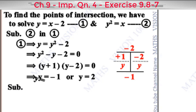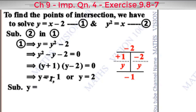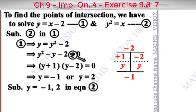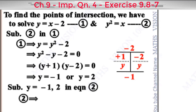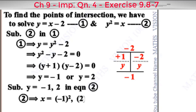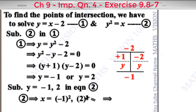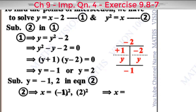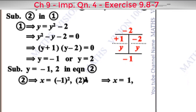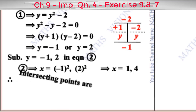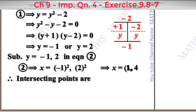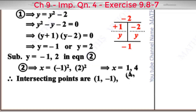Now substituting back to find x: when y equals minus 1, x equals y squared equals 1; when y equals 2, x equals y squared equals 4. Therefore the intersecting points are (1, minus 1) and (4, 2).